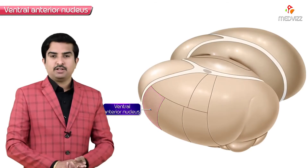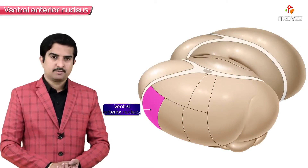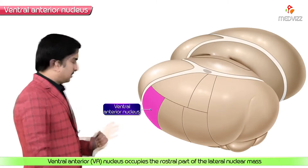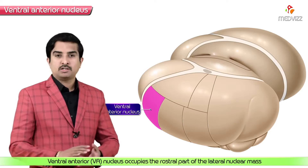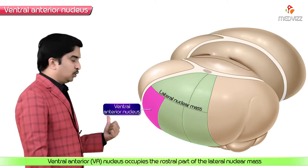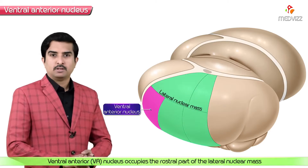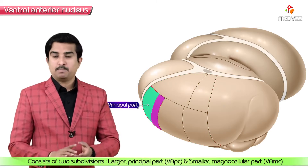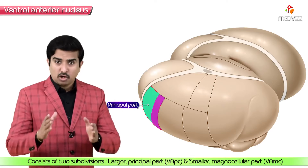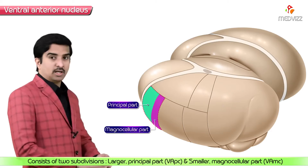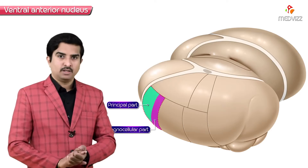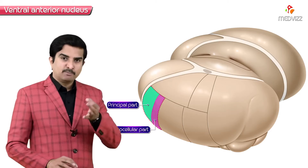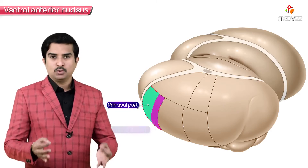The ventral anterior nucleus of the thalamus occupies the rostral part of the lateral nuclear mass. It consists of two subdivisions: the larger principal part and the smaller magnocellular part.